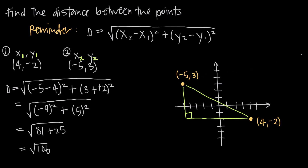When we're looking for the distance between these two points, the distance we're looking for is the diagonal line that directly connects them — and that's what we already solved for: the square root of 106. The reason this works is because the distance formula is just an application of the Pythagorean theorem, which tells us a squared plus b squared equals c squared, where c is the hypotenuse of a right triangle.